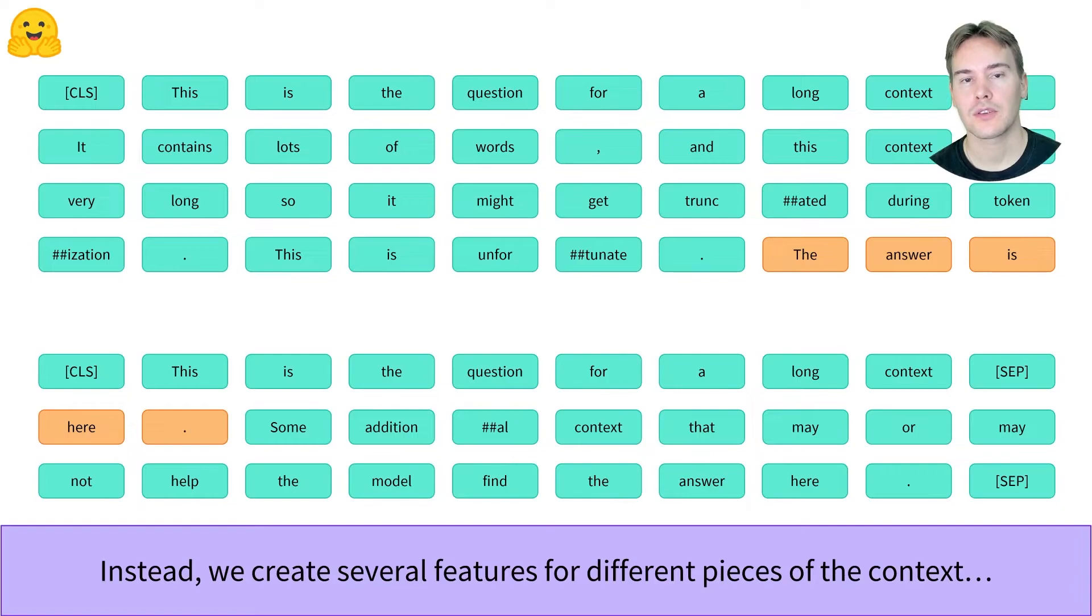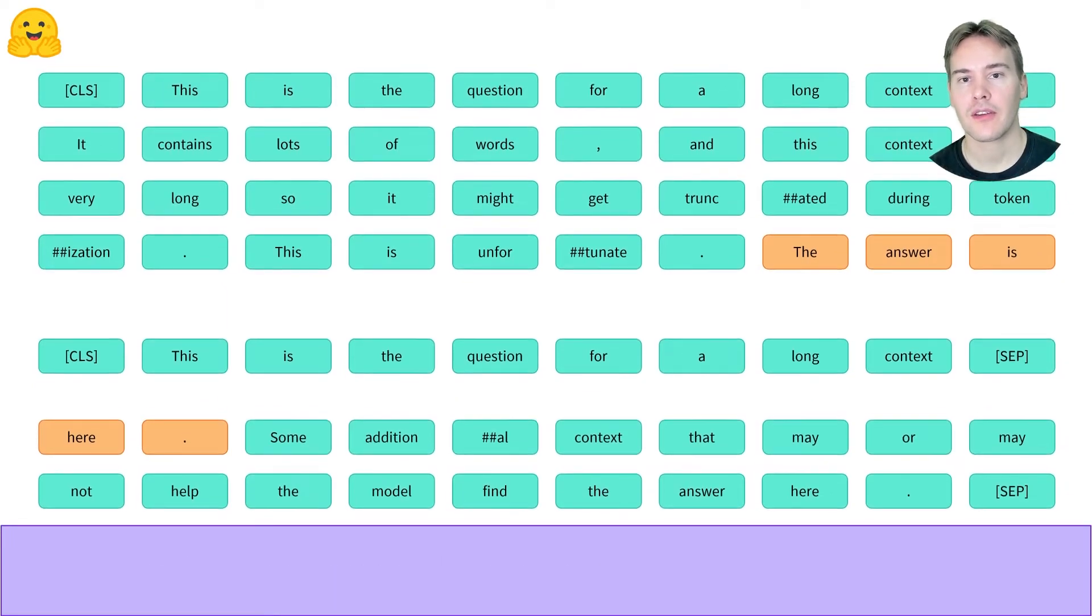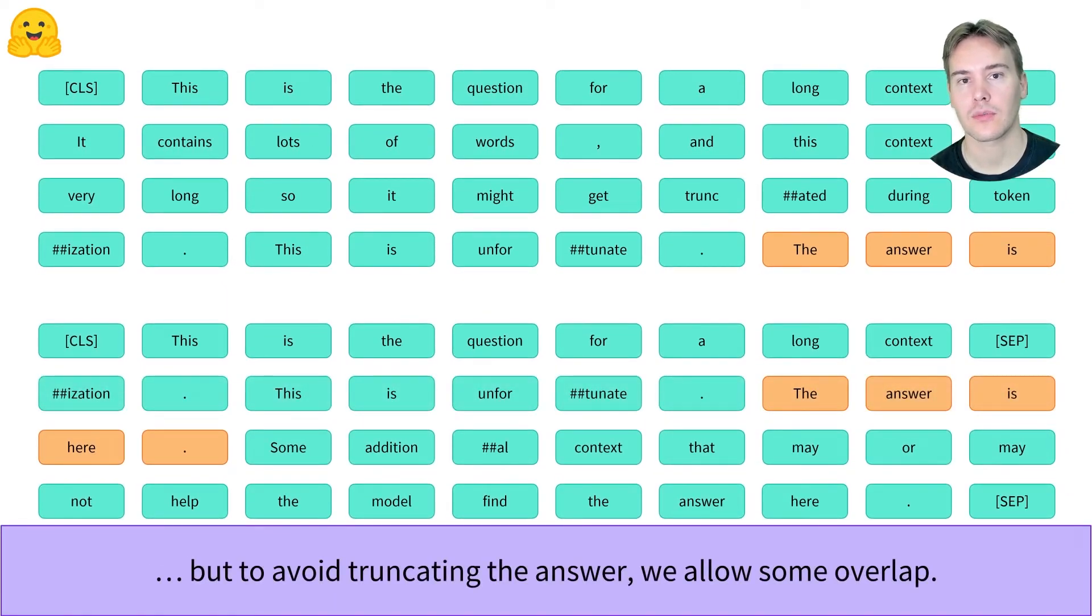Each of those features contains the question then a chunk of text in the context. If we take these chunks of text, we might end up with the answer being split between two features. So instead, we take overlapping chunks of text to make sure at least one of the chunks will fully contain the answer to the question.